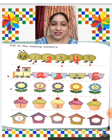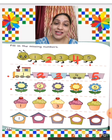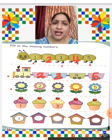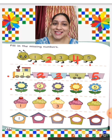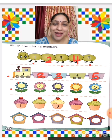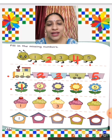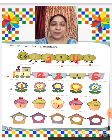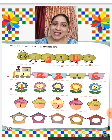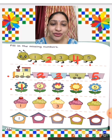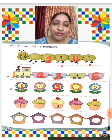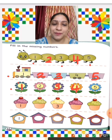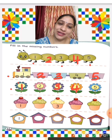The next row has flowers and some numbers, and some numbers are missing. So we are going to write the missing numbers: 1 is missing, 2 is there, 3 is missing, 4 is missing, 5 is written.